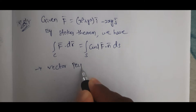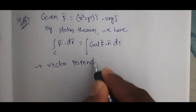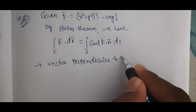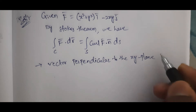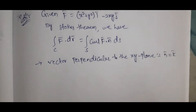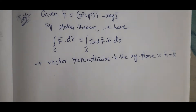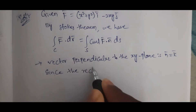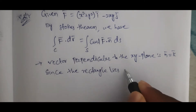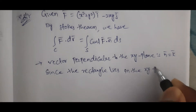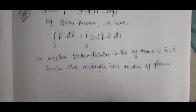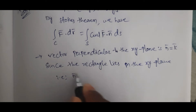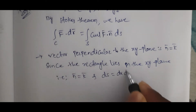Since the rectangle lies in the xy plane, the vector perpendicular to the xy plane is n̄ = k̄, and dS = dx dy.